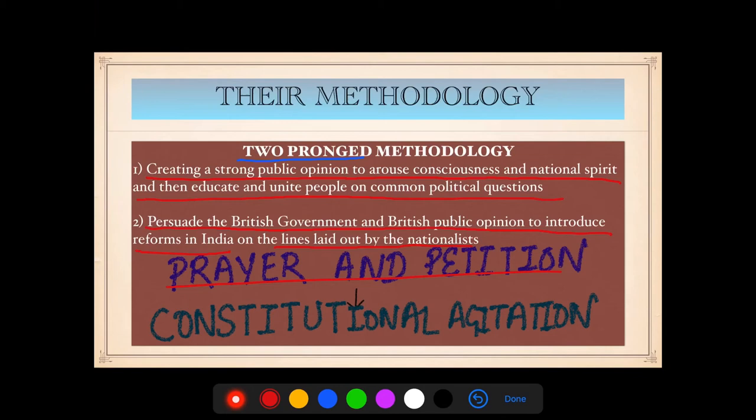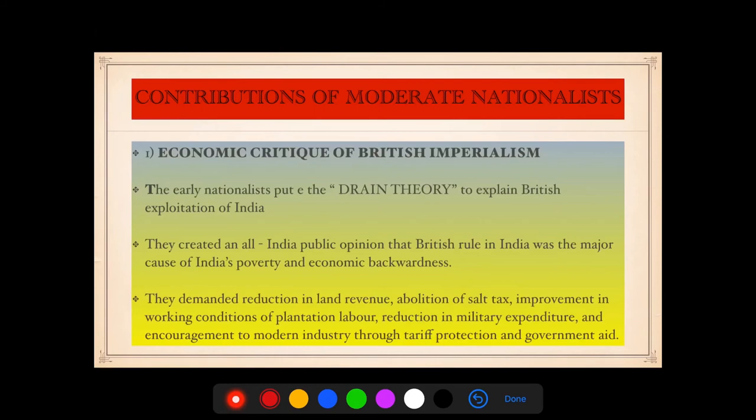The Moderates had a two-pronged methodology. First, creating a strong public opinion to arouse consciousness and national spirit, and educating and uniting people on common political questions. Second, persuading the British government and British public opinion to introduce reforms in India on the lines laid out by the nationalists. They believed in prayer and petition, and if that did not work, they would resort to constitutional agitation.